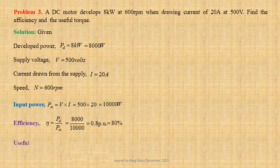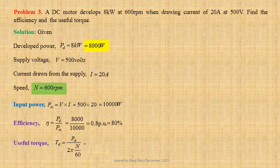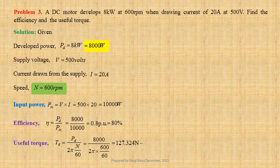Useful torque T_d equals P_d divided by 2*pi*N/60. Using values we get 8000 divided by 2*pi into 600/60. That gives us 127.324 Nm.